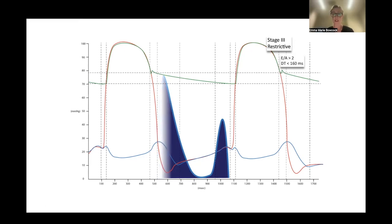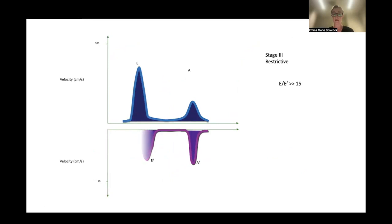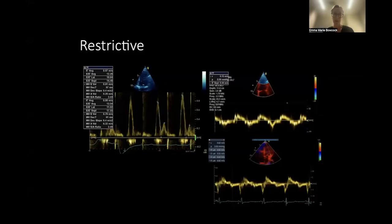I'm sure you've seen these kinds of patients before. Their E-primes are often very low because they've got really stiff, non-compliant ventricles. You often see this delay as well between your E-wave and your E-prime. Generally speaking, not always, but they have E to E-prime values of more than 14.